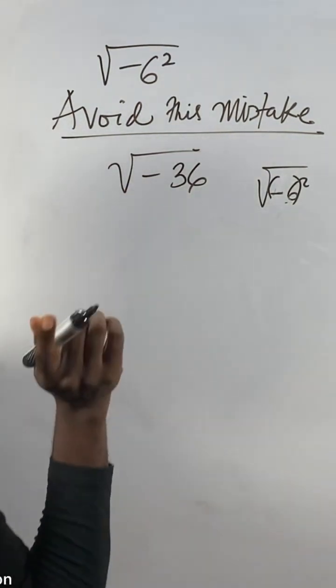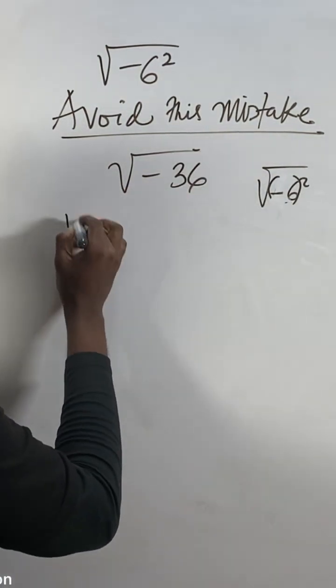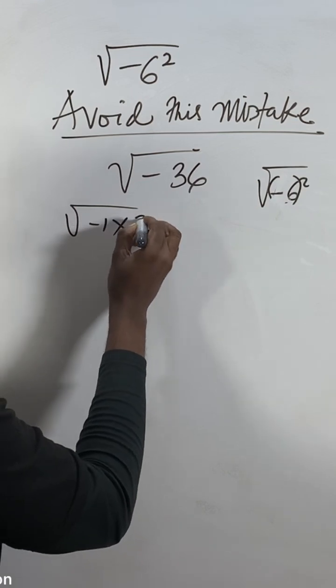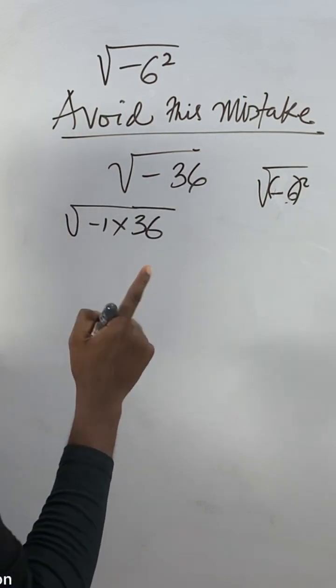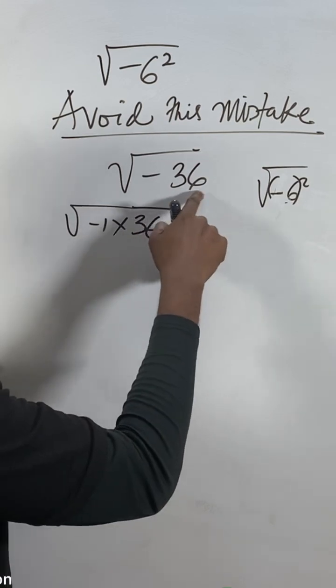So which you can't do for this particular place. You know see this one just be like the square root of minus one times 36. Why I talk like that? Because you know now one times 36 and still 36, this minus, this minus.